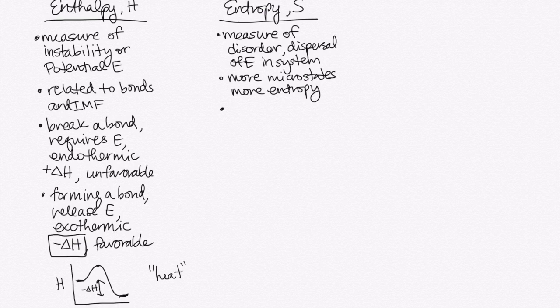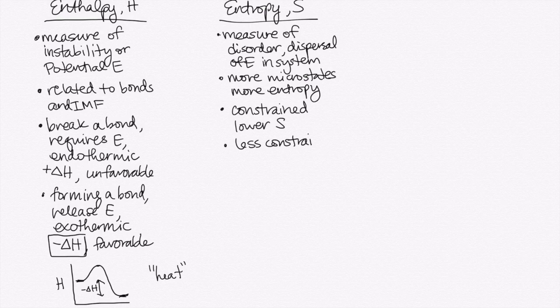This means if you have something that is constrained, such as atoms that are in a crystal lattice in a solid, that would have lower entropy. And if you had something that was less constrained, like gas molecules moving around, then that would have higher entropy.